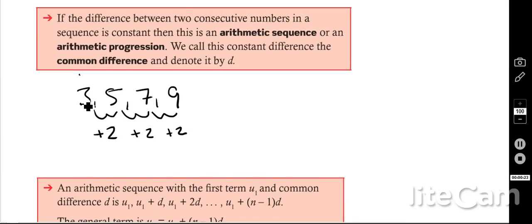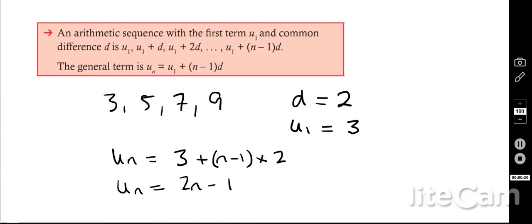Arithmetic sequences are where we add a constant term each time, so in this case we're adding two each time, and we have a general nth term, u1 plus n minus 1 times d, that gives us the nth term formula.